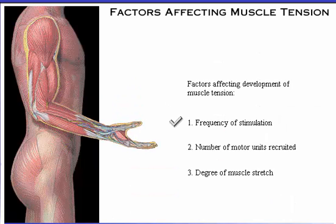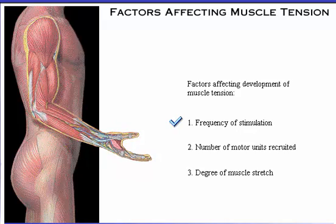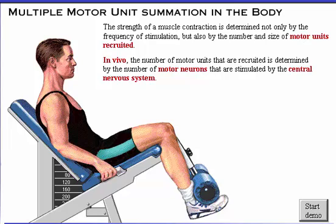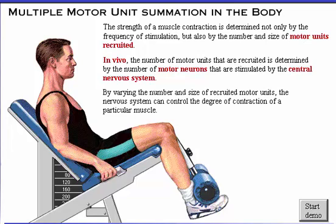We have just examined how the frequency of stimulation affects the development of muscle tension. We will now explore the relationship between the number of motor units recruited and the strength of contraction. The strength of a muscle contraction is determined not only by the frequency of stimulation, but also by the number and size of motor units recruited. In vivo, the number of motor units recruited is determined by the number of motor neurons stimulated by the central nervous system. By varying the number and size of recruited motor units, the nervous system can control the degree of contraction of a particular muscle.